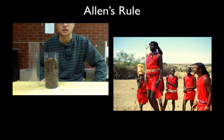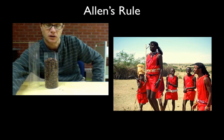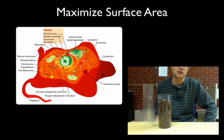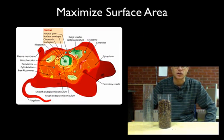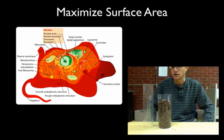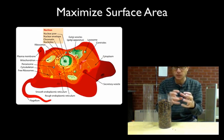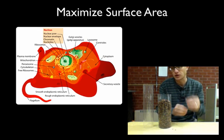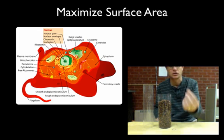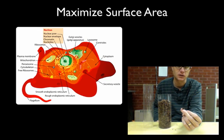These are some Maasai warriors doing this jumping dance. They're going to be really tall and slender. But it also gets to the idea of why cells are small. So why are cells small? Well, by making them smaller and smaller and smaller, what we can do is maximize their surface area.